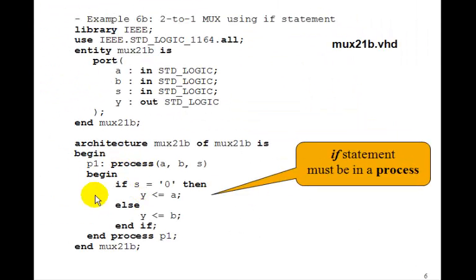Let's see how we put it in a program. The if statement must be in what's called a process. A process can have a label here, this is optional, followed by the word process, and then begin end process. And in there is this so-called sequential statement, which in this case is an if statement. If S equals 0, then Y equals A, gets assigned A, else Y gets assigned B, end if.